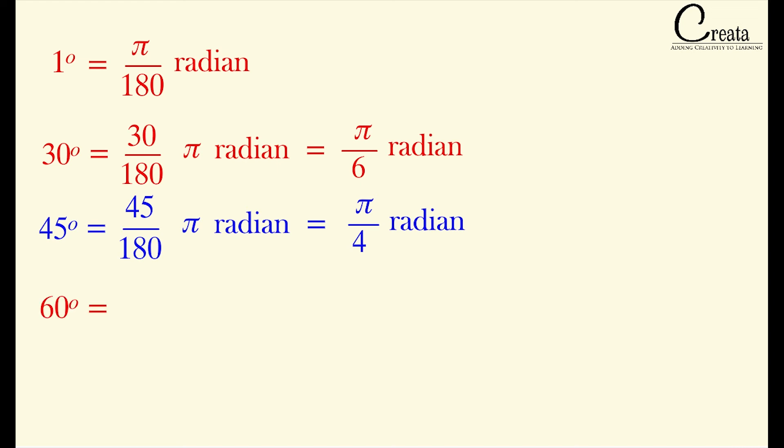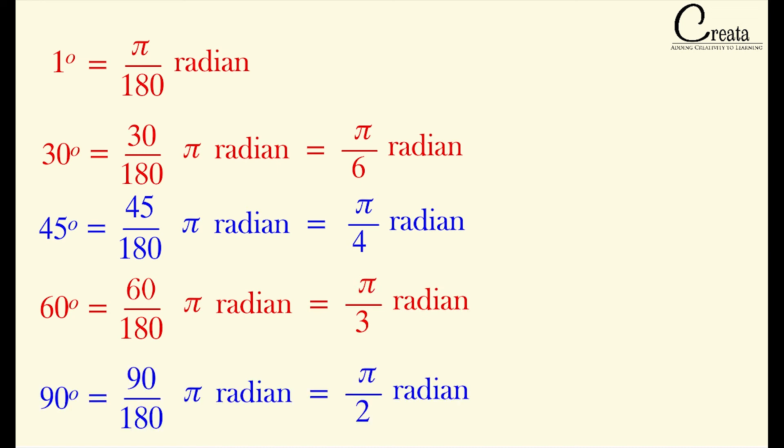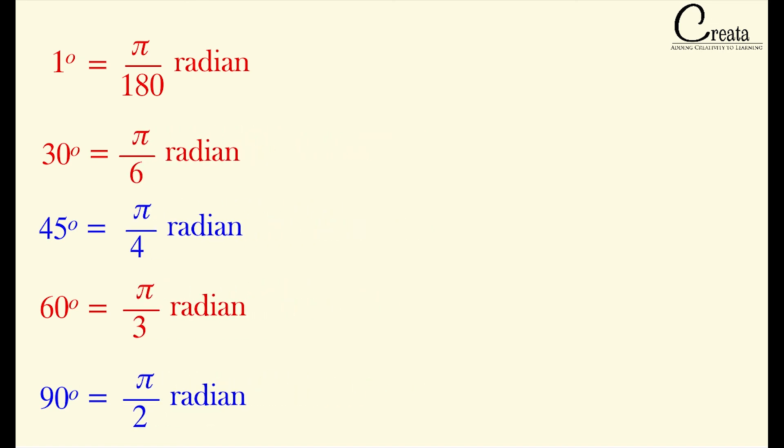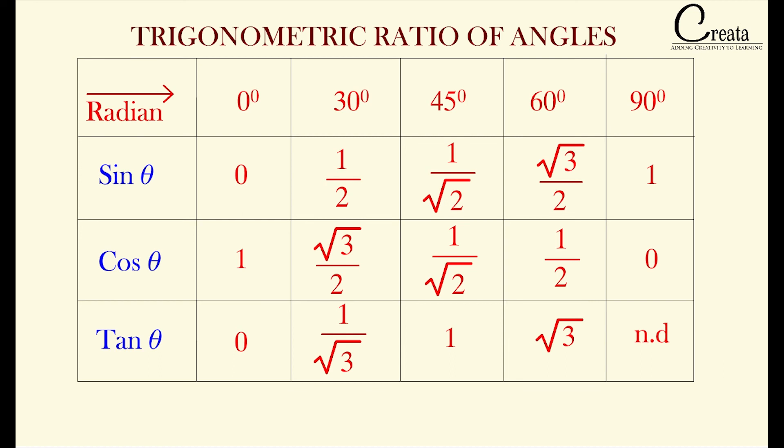Similarly, 60 degree is pi by 3 radian. And 90 degree is pi by 2 radian. If we want our trigonometric table in radian form, we can replace the angles in degree to the radian form. You have seen both the table in different books. Now you understand that one is in degree form and other is in radian form.